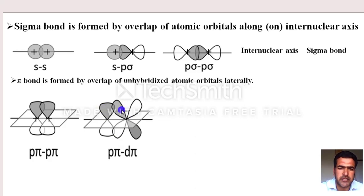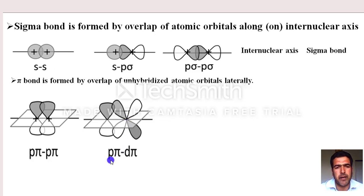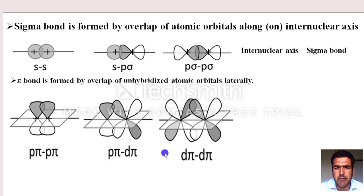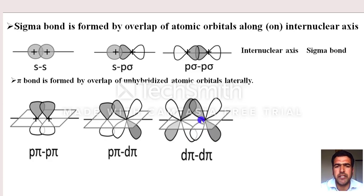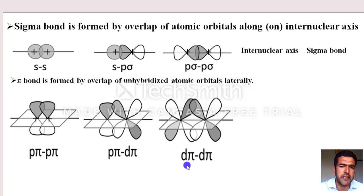The d orbital is double-lobed in shape. So one atom's p orbital can overlap with another atom's d orbital sideways, forming a pπ-dπ bond. This is the second type of pi bond.